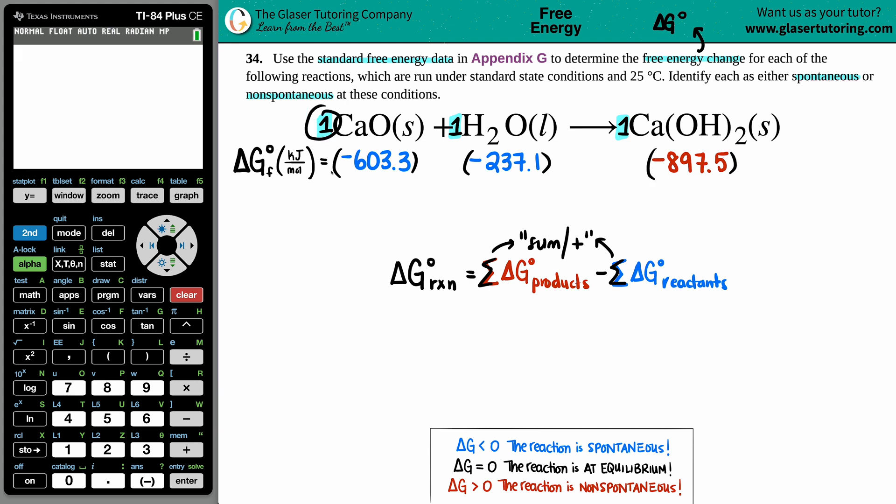So I have one CaO, so I'm going to multiply the -603.3 times one. It's going to be the same number, but I'm just showing you that if you had a two, you would multiply the number by two. So -237.1 is also multiplied by one, and same thing for the -897.5, that's multiplied by one.